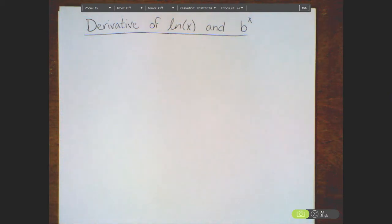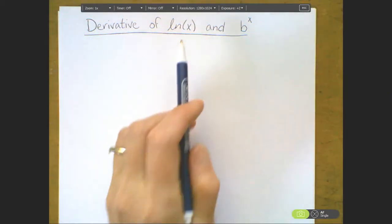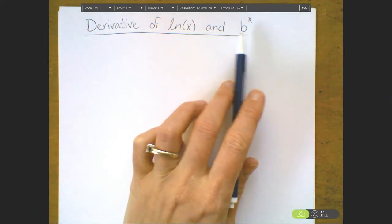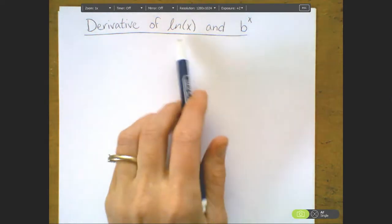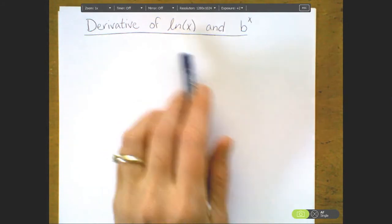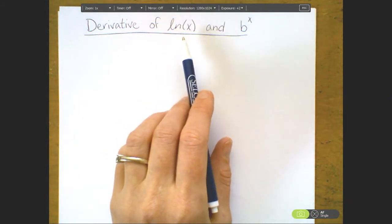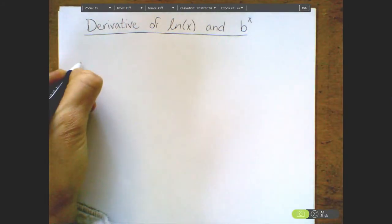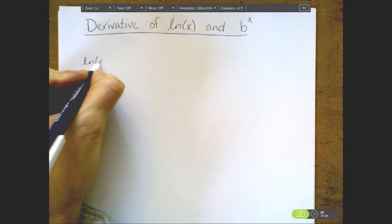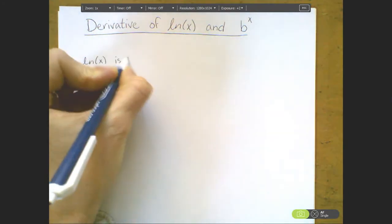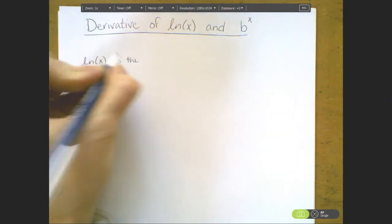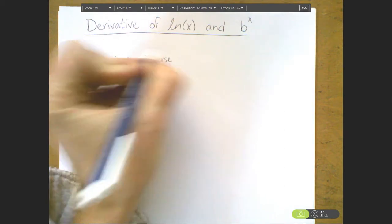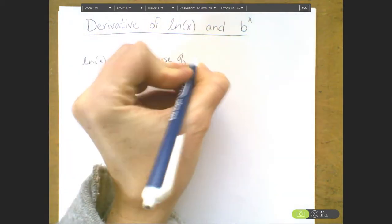Next, we're going to take a look at the derivative of natural log of x and b to the x, where b is some constant. We're going to start by looking at natural log of x. First, let's recall what natural log of x is. Natural log is the inverse function of the function e to the x.